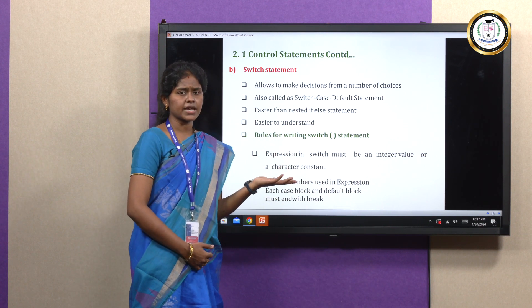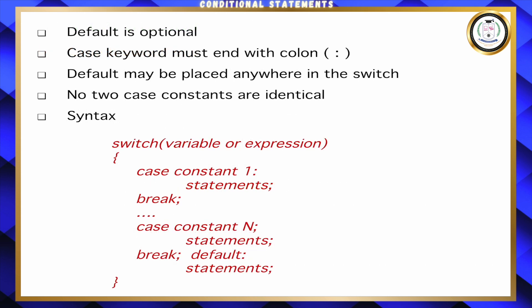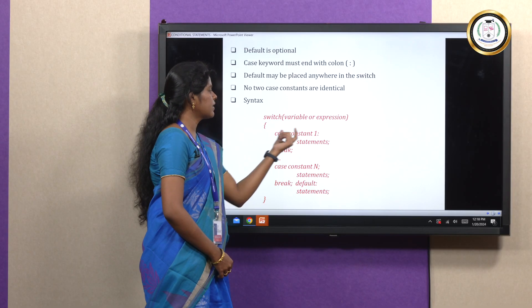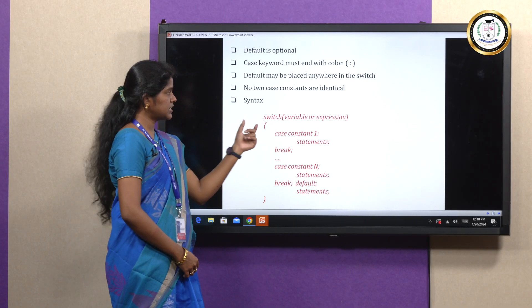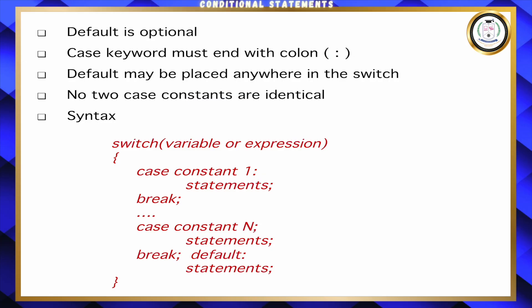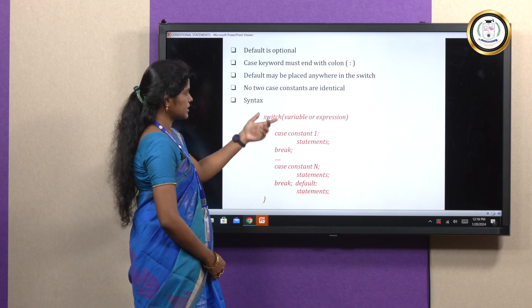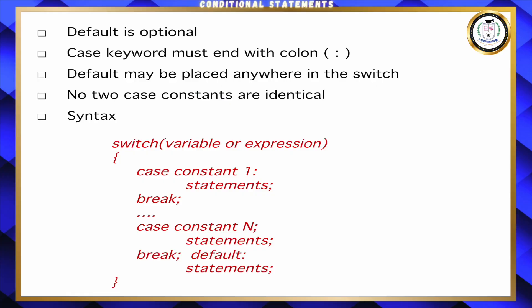We can have any number of choices in the switch case statement and choose whichever operation we want to perform. This is the basic syntax for the switch case statement. No two case constants should be identical — the case constant is the number given before the colon to identify which case the user is choosing. The user's choice is obtained from the display screen. Each case should be numbered uniquely: case 1, case 2, and so on. Finally, we can give the default statement, and every case statement should end with break.